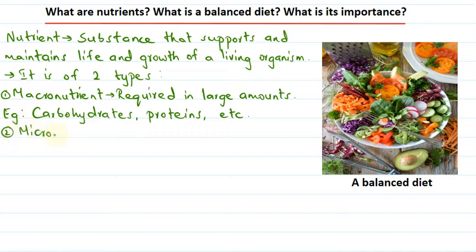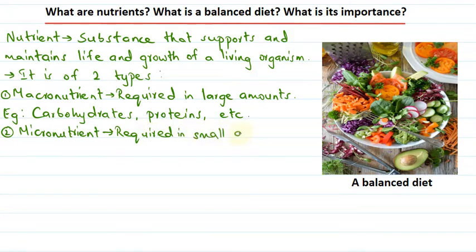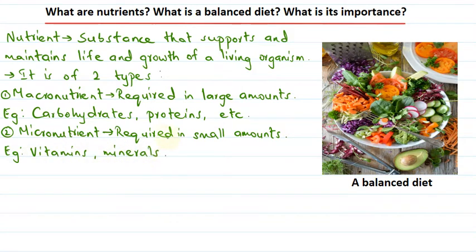The other type of nutrient is called micronutrients. These nutrients are required in smaller amounts by our body. For example, vitamins and minerals. So this is about nutrients.